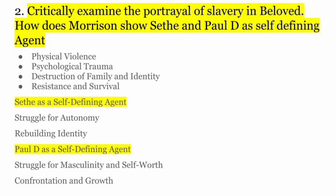Toh slavery ka portrayal kaisa kaisa hai — ek toh physical violence ke taraf, psychological trauma, mental trauma jo tha, phir destruction of family, ki woh doosre se ek baar bichhad gayi thi, apne husband se bichhad gayi thi Sethe. Identity, resistance, survival — yeh sare themes aa jate hai portrayal of slavery mein. Phir Sethe ko kaisi dikhaya gaya hai self-defining agent — woh hai apne struggle for autonomy ke liye, ki woh kitna zyada try karti hai ki woh saari chizo ko chhodd kar aage badhe, par baar baar unhi chizo mein phasti chalti jaati hai. Phir hai rebuilding identity — ki woh apne past experiences ko nahi chhodd pa rahi hai, woh apni identity ko dobara build karne ki koshish karti hai, par hamesha haunt karti hai uska past usko.